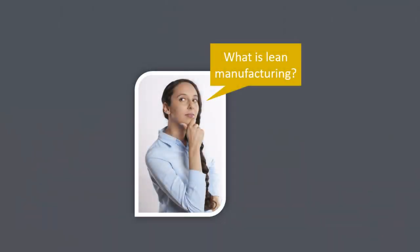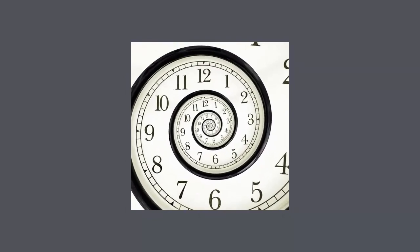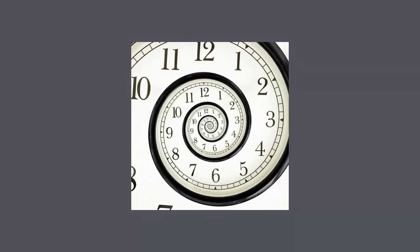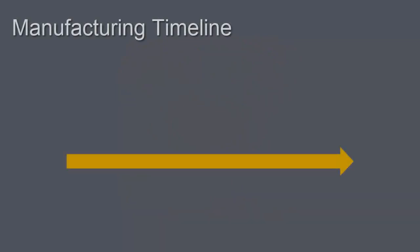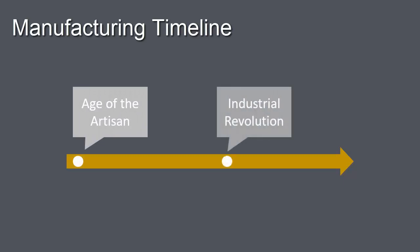We're here today to learn about lean manufacturing. So what exactly is lean manufacturing? The best way to answer this question is to take a step back and look at the broader history of manufacturing. We can roughly divide the growth of manufacturing into three sections: the age of the artisan, the industrial revolution, and modern times.